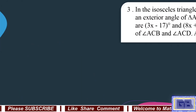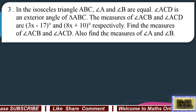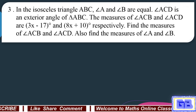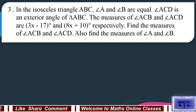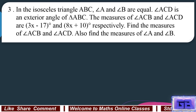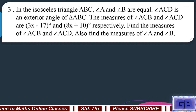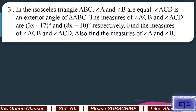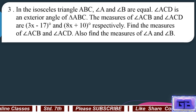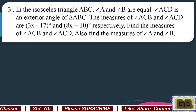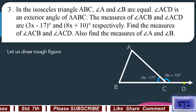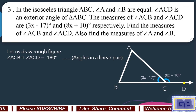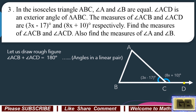Question number 3: In isosceles triangle ABC, angle A and angle B are equal. Angle ACD is an exterior angle of triangle ABC. The measures of angle ACB and angle ACD are (3x minus 17) degrees and (8x plus 10) degrees respectively. Find the measures of angle ACB and angle ACD, and also find the measures of angle A and angle B. Let us draw a rough figure. Angle ACB plus angle ACD equals 180 degrees as these are angles in a linear pair.